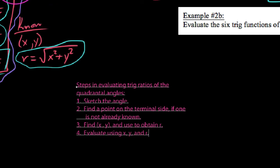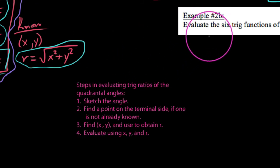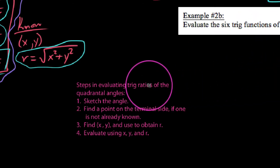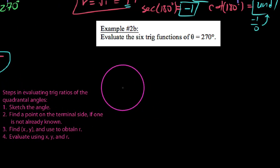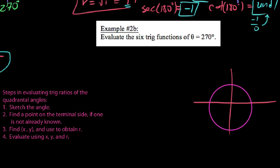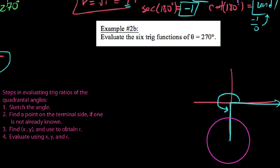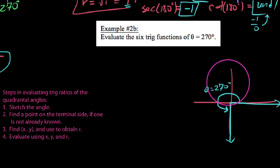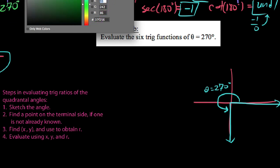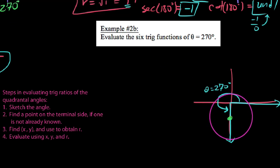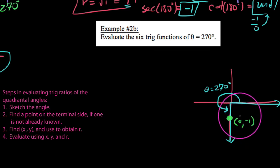Let's apply these steps to Example 2B: find the six trig functions of 270 degrees. Step one, sketch the angle: a 270 degree angle in standard position starts on the positive x-axis and rotates 270 degrees, landing on the negative y-axis. Step two, find a point on the terminal side: I'll pick the point zero comma negative one.